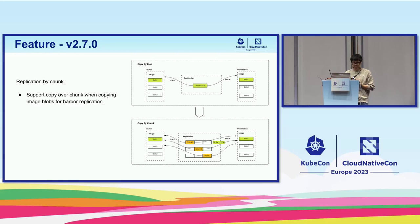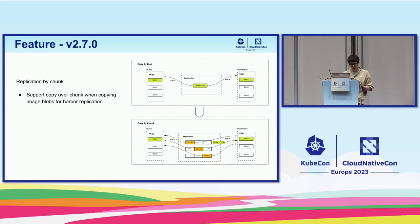Next is replication by chunk. When you need to copy a large amount of data, there is a feature called copy by chunk that can help. This feature splits big blobs into small pieces, which makes it easier to copy them over the network. This is especially helpful when the network connection is not very strong, like when you are working with edge computing. By using this feature, you can increase the chances that the replication will succeed. To enable that, all you need to do is just click a button when you're creating the replication policy.